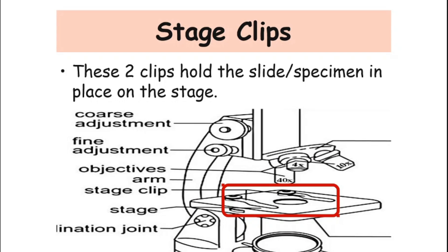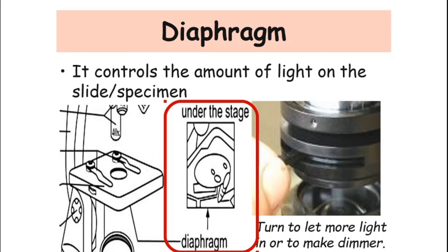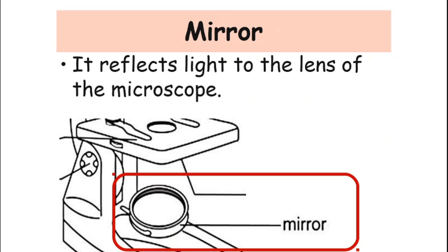Next are the stage clips. These two clips hold the slide specimen in place on the stage. Next is the diaphragm, or iris diaphragm. The iris diaphragm is located under the stage and controls the amount of light on the slide or specimen — you turn it to let more light in or to make it dimmer. Next is the mirror, which reflects light to the lens of the microscope.